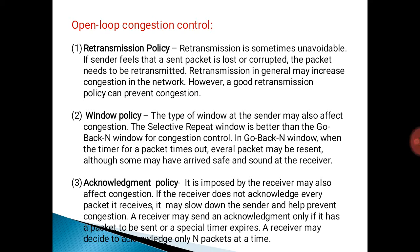Now we will look at open loop congestion control. The first policy is retransmission policy. Retransmission is sometimes unavoidable — if the sender feels that a sent packet is lost or corrupted, the packet needs to be retransmitted. Retransmission in general may increase congestion in the network; however, a good retransmission policy can prevent congestion.